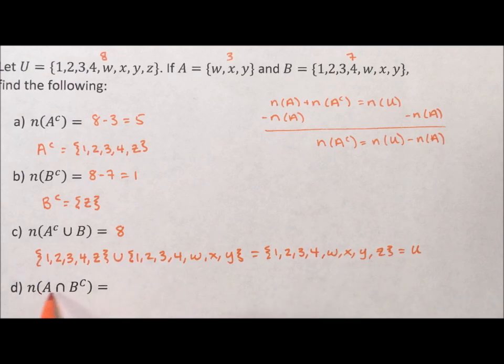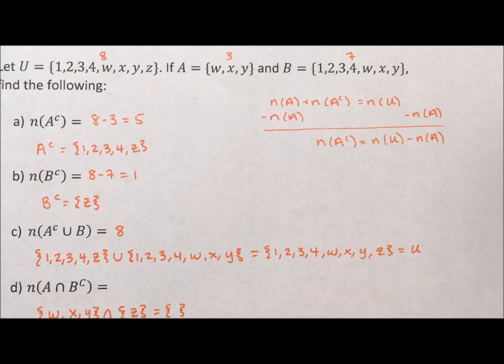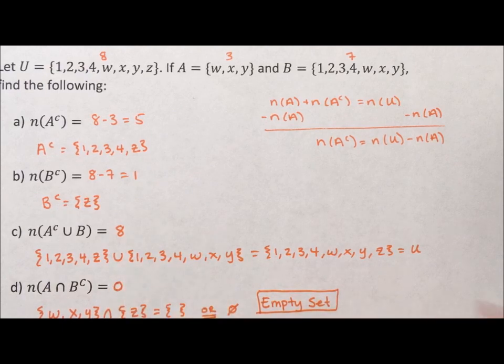A intersection B complement. Well, A has the elements W, X, Y. We want the intersection with B complement. Well, B complement is right here. It's Z. Intersection means we're looking for the elements that are the same. Well, there are no elements that are the same. I can write that as a set of curly brackets with nothing in it. Or, not both, I could write it as a circle with a slash. Both of these represent the empty set. The empty set is one of the only sets we call by name. And the empty set has zero elements in it.